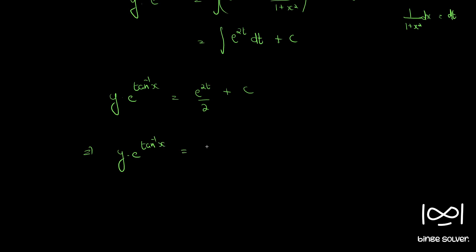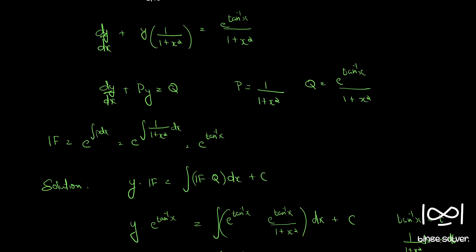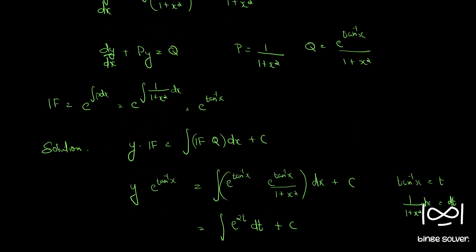So y · e^(tan⁻¹x) = e^(2t)/2 + C. Substituting back t = tan⁻¹x, the final solution is y · e^(tan⁻¹x) = e^(2·tan⁻¹x) / 2 + C. This is the final solution to Question 246.